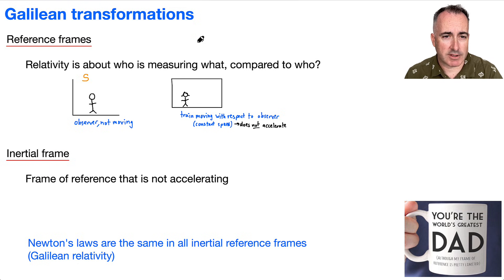Whereas if you're on a train, for example, we tend to call S primed. And that's the reference frame where if you're sitting inside this train, things might seem normal inside there, but then this person watching you, then all sorts of crazy things happen. So S primed is going to be the reference frame of a train that's moving with respect to the observer. And we're going to say it's at a constant speed, doesn't accelerate.